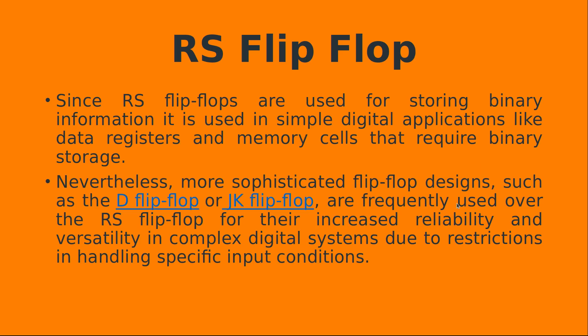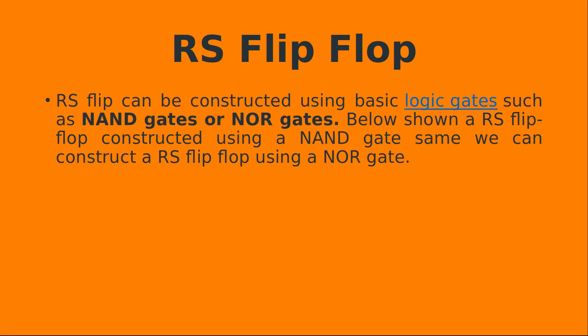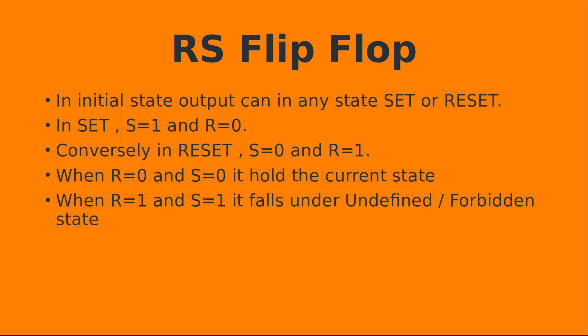The R-S flip-flop is used for the purpose of designing the D flip-flop and JK flip-flop, providing increased reliability and versatility in complex digital systems due to restrictions in handling specific input conditions. The R-S flip-flop is constructed using NAND gates or NOR gates — both of which belong to universal gates. That is why we use the R-S flip-flop.